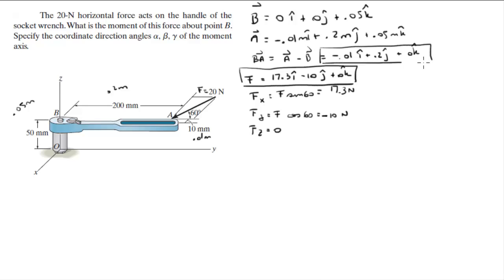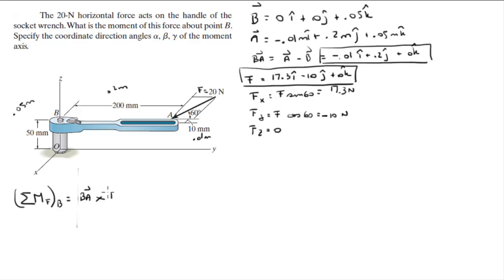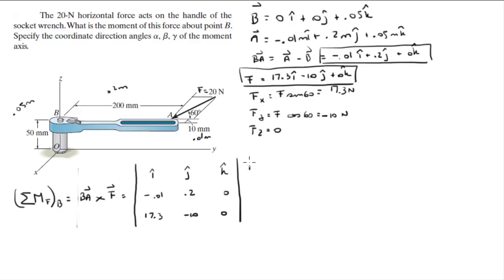Now we find the moment that F creates about B using the cross product of vector BA cross F. Draw the matrix: I, J, K. The first vector BA is negative 0.01, 0.2, and 0. The force vector is 17.3, negative 10, and 0. Rewrite the first and second columns: negative 0.01, 0.2, 17.3, negative 10 to compute the diagonals.